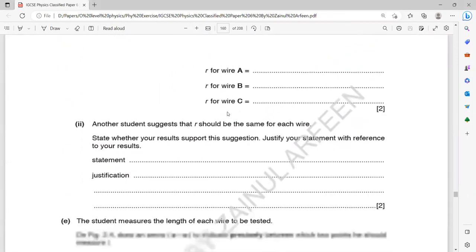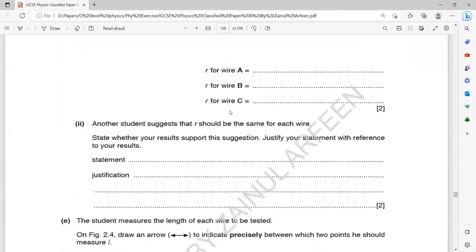The next part, another student suggests that R over L should be same for each. Like our values were, this was 6.24, this was 6.40, this is 6.48. Are the values equal? Yes or no? State whether your result supports this suggestion and justify the statement with reference to your result. Are the values equal?